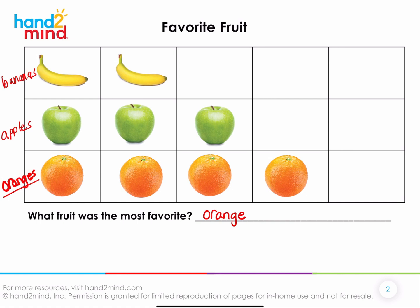How many of you said: because when I'm looking at the graph, I can see that the orange row extends further than any of the other ones — I can just see that it's more. Yeah, you can just see that it's more. Is there another way you could tell me that it's more?